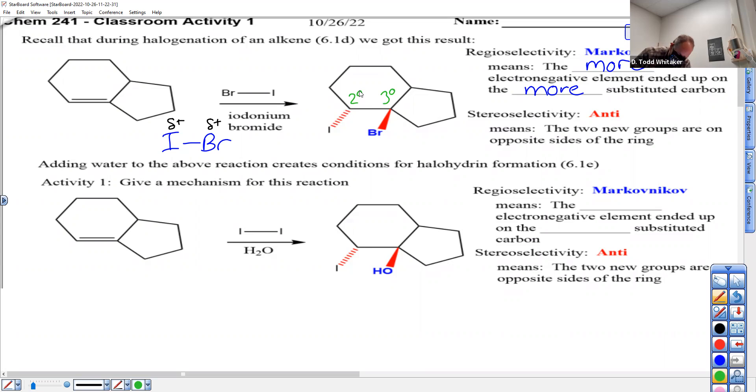And we have two new words. Stereoselectivity means the two groups, when they're anti, they're on opposite sides of the ring. And that happens when we get what's called in the mechanism a backside attack. Every time you do a backside attack, you will get an anti result in terms of up and down.